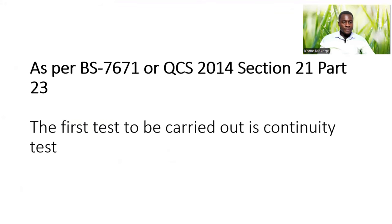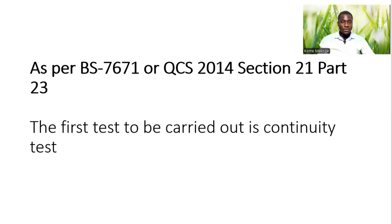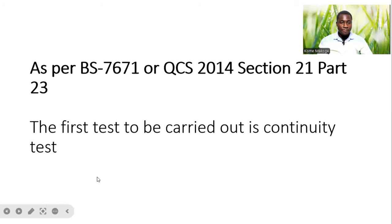We'll be referencing BS 7671 or QCS 2014 section 21 by 23. If we look at these two different codes, they are saying the same thing — giving the same different tests that should be carried out. The different types of tests found in BS 7671 are the same tests you also find in QCS 2014 section 21 by 23.